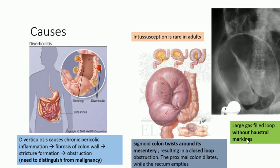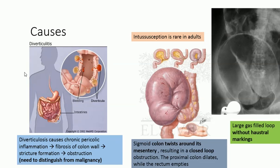One of the common causes is diverticulitis. These objects are diverticula. Whenever there is inflammation inside a diverticulum, it causes a paracolic inflammatory process, which causes fibrosis of the intestinal walls. When this inflammatory process happens over and over again, acute diverticulitis changes into chronic diverticulitis, causing more fibrosis and stricture formation, which leads to obstruction.